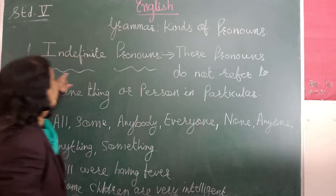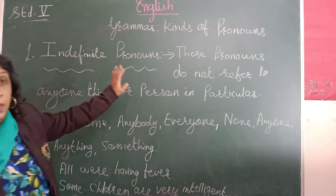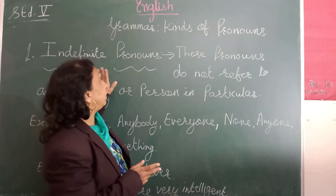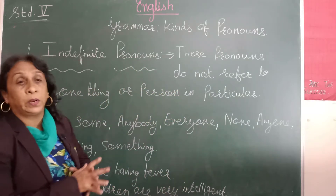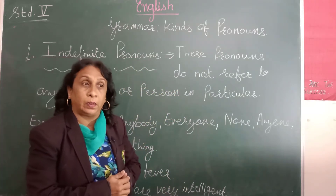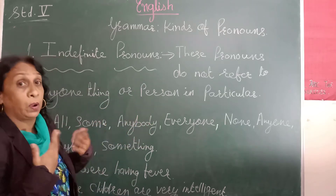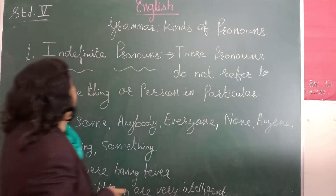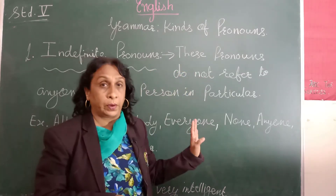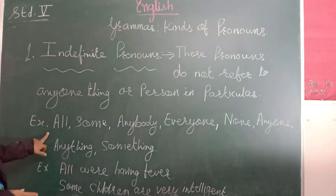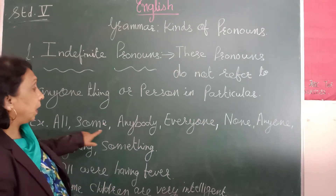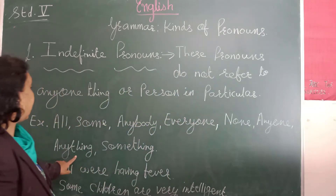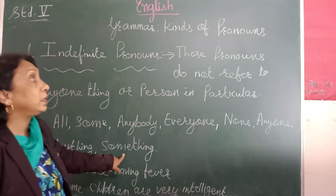Today we are going to look at indefinite pronouns. Demonstrative means particular — we point out to a particular thing. But in indefinite pronouns, we do not refer to any particular person or thing; it is in general. So it may be all, some, few, many — these pronouns do not refer to any one thing or person in particular.